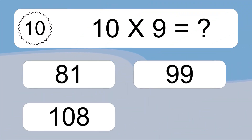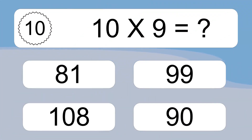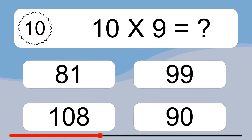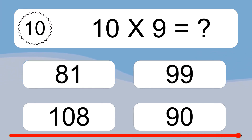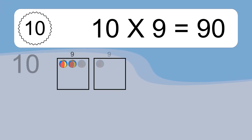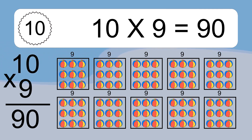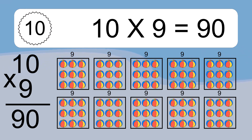10 times 9 equals what? 10 times 9 equals 90. We have 10 boxes and each box has 9 colorful balls inside. If you count all the balls in all the boxes together, you will have 10 times 9 balls. This equals 90 balls.